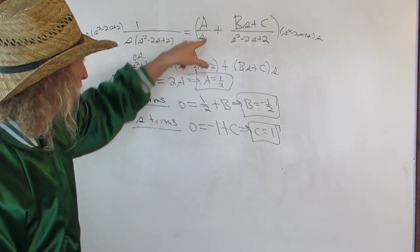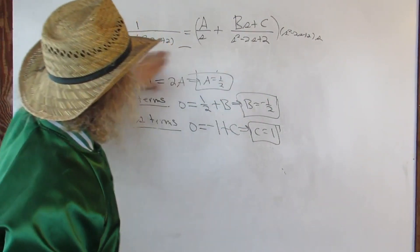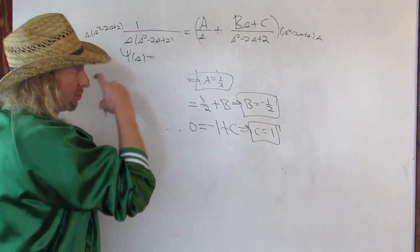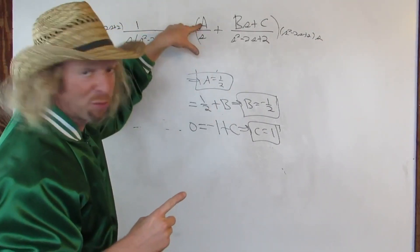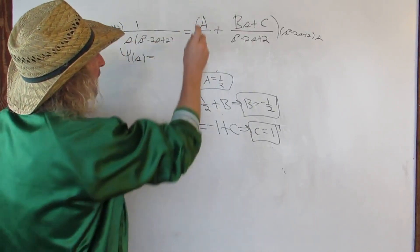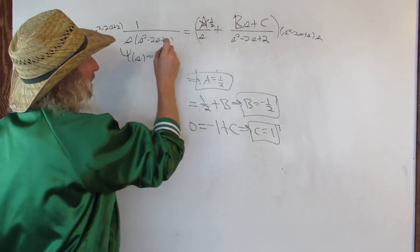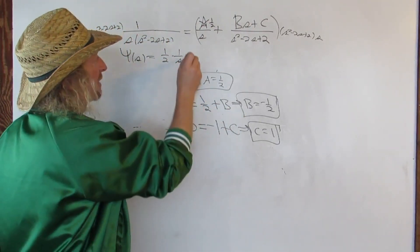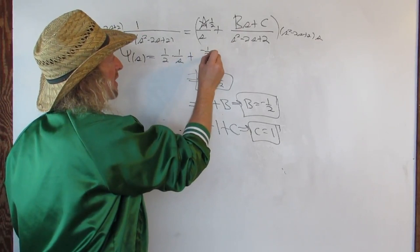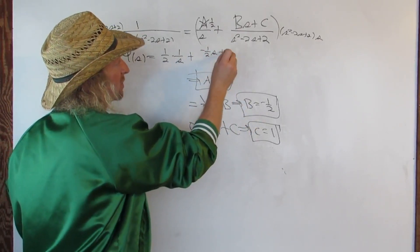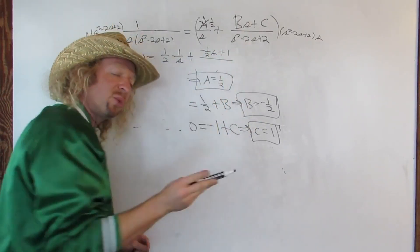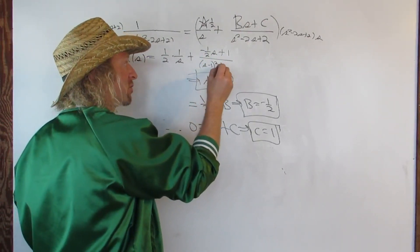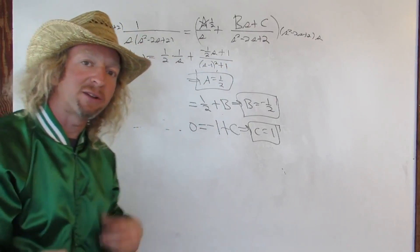Now I'll plug everything back in. So Y(s) equals one half times (1 over s), plus (negative one half s plus 1) over (s minus 1) squared plus 1. We write the denominator back in the factored form (s minus 1) squared plus 1 because that's more convenient for what we're about to do.